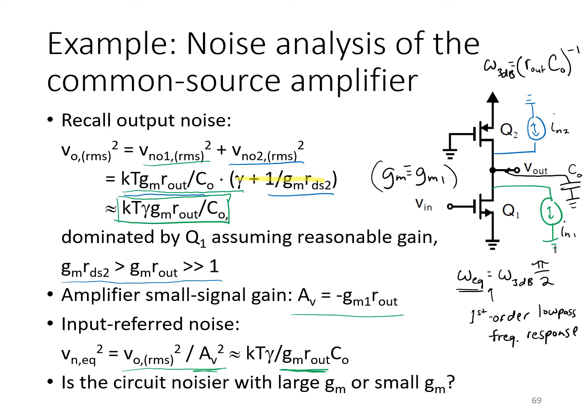This raises an interesting question because we see the expression for output noise has GM and the gain of the whole stage in the numerator, whereas in the expression for input-referred noise, GM of Q1 and the gain of the whole amplifier appear in the denominator. So if we want to design this stage for low noise, should we design it to have a large GM or a small GM?